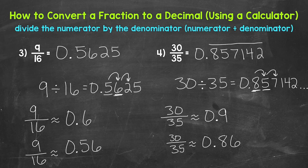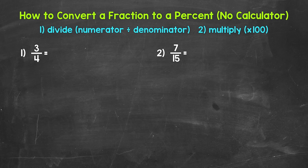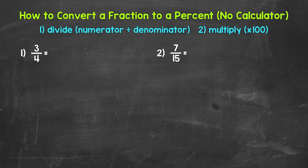There you have it — that's how to convert a fraction to a decimal. Let's move on to fractions to percents. When converting fractions to percents, we divide the numerator by the denominator to get a decimal, then multiply that decimal by 100 to get the percent. A quick way to multiply by 100 is to move the decimal twice to the right. So we go from a fraction to a decimal and then that decimal to a percent.